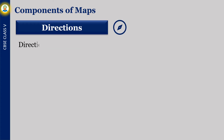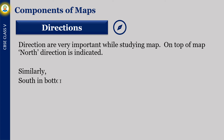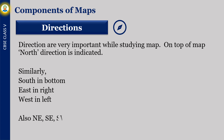Direction is very important while studying a map. On the top of the map, the north direction is indicated. Similarly, south is at the bottom, east is to the right, and west is to the left. We also indicate northeast, southeast, southwest and northwest.